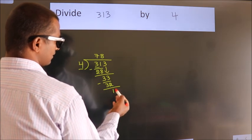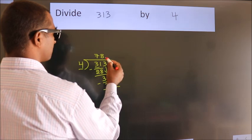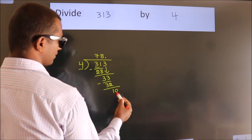After this, no more numbers to bring it down. So what we do is, we put dot take 0. So, 10.